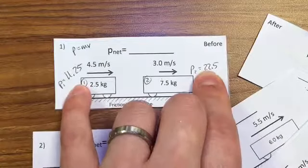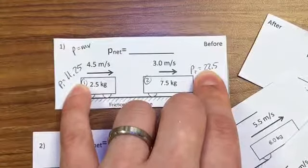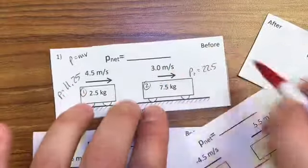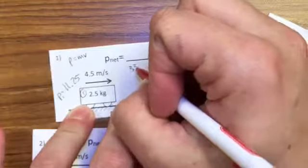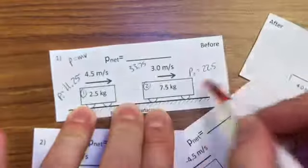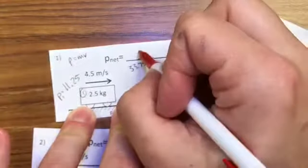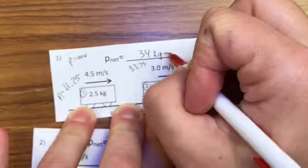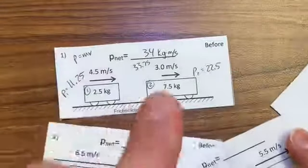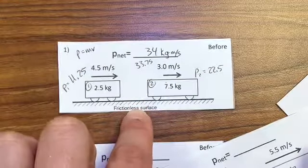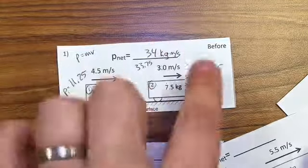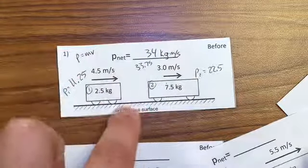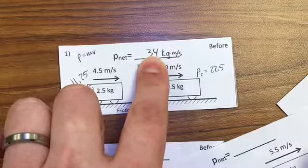Now I have to add those together. Calculator says 33.75. Significant figures, two significant figures, 34. And units measure kilogram meters per second. So I know the net momentum of this system before the collision is 34 kilogram meters per second.